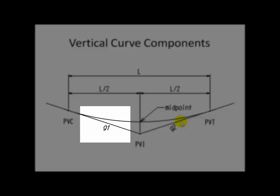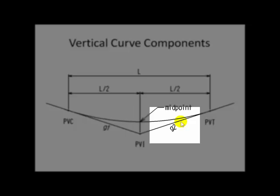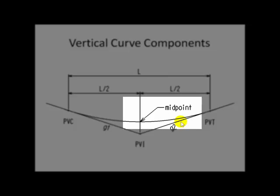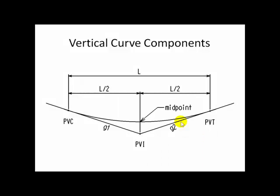And the outbound grade, or slope, we call G2. The midpoint of the vertical curve is not necessarily the low point or the high point. In this case, we have drawn this figure as one where G1 equals G2. The inbound slope equals the outbound slope.